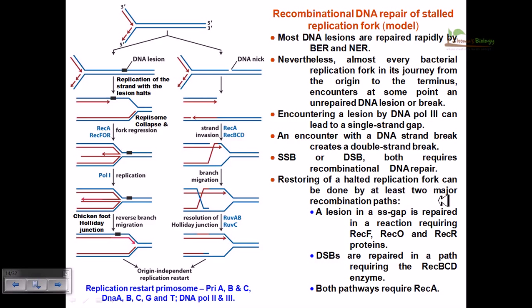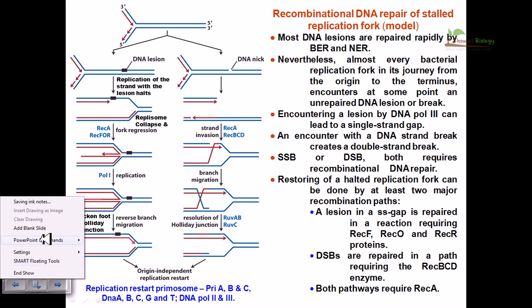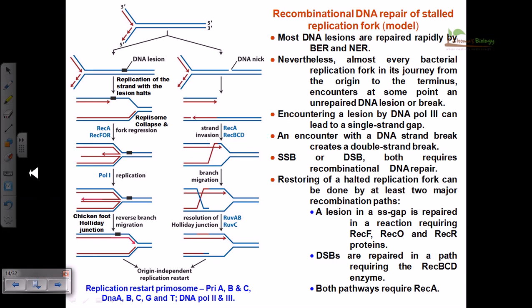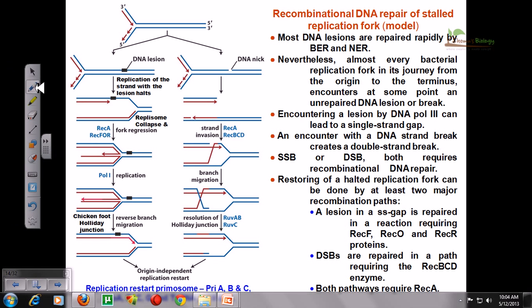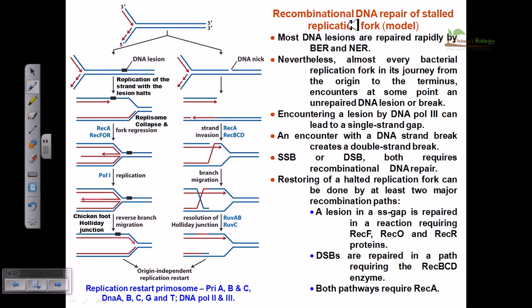Hello friends. In this video tutorial we are going to see the recombinational DNA repair of stalled replication fork. The replication fork is an important machinery which helps to proceed DNA replication very carefully, because it helps to simultaneously replicate both strands at the same time. This is the structure of the replication fork — it looks like a Y-shaped structure, with a leading strand and a lagging strand.